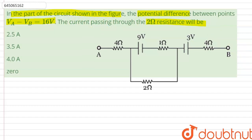So, the question is asking us to calculate the current passing through this 2 ohm resistance if the potential difference between A and B is 16 volts.